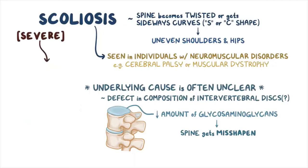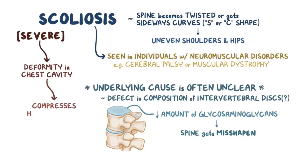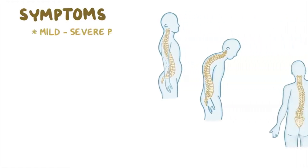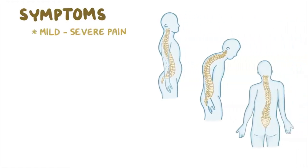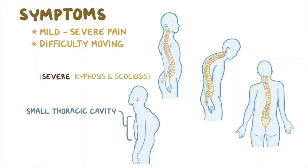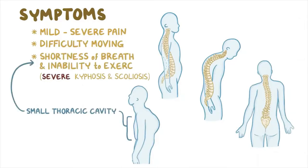In severe scoliosis, there can be a deformity in the chest cavity compressing the heart and lungs, similar to severe kyphosis. Spinal deformities can cause mild to severe pain and stiffness making movement difficult. In severe kyphosis and scoliosis, a small thoracic cavity can lead to shortness of breath and an inability to exercise.